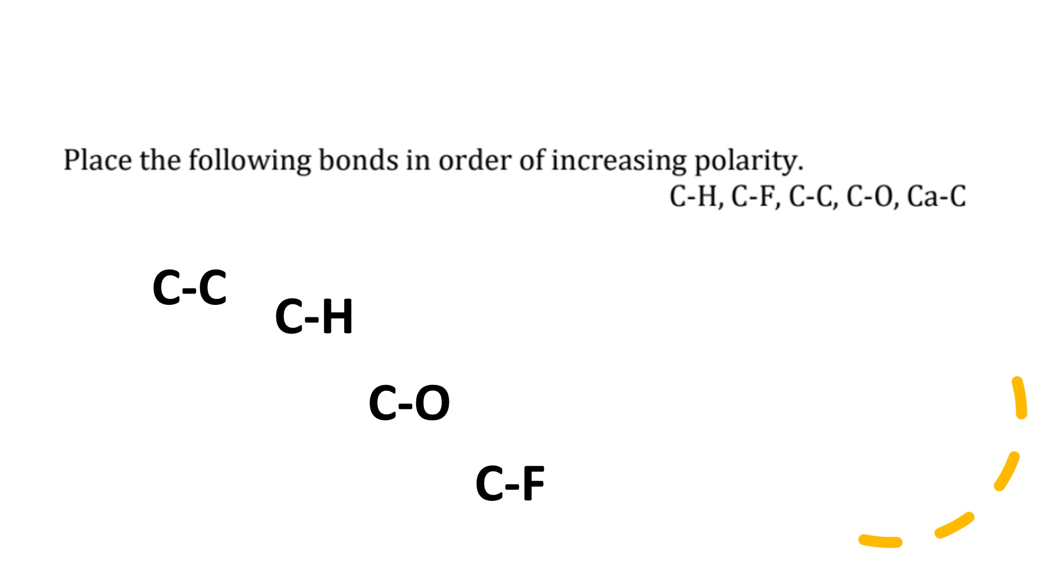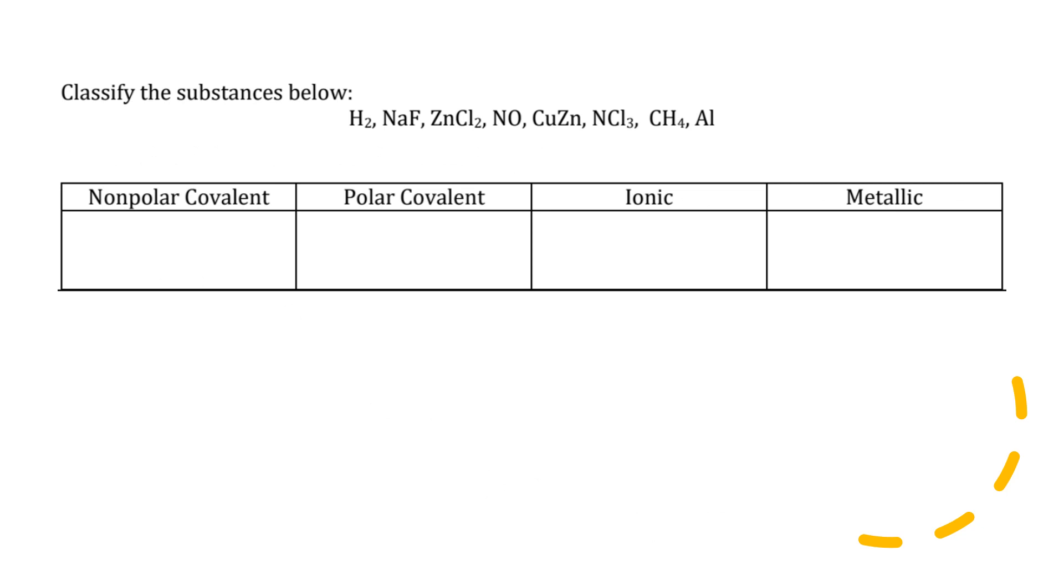Classify the following substances below: H2, NaF, ZnCl2, nitrogen monoxide, copper-zinc bonded together, nitrogen trichloride, methane or carbon tetrahydride, and aluminum. I'll give you all a few seconds to figure out how you would arrange it or how you think you'd arrange it.